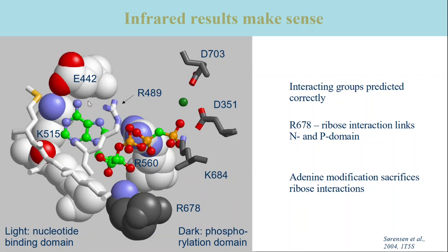The X-ray structure confirms the interactions found by infrared spectroscopy and explains why the modified groups are important. Most interactions with the nucleotide are with residues in the nucleotide binding domain. However, the ribose oxygens and the gamma phosphate interact with the phosphorylation domain. They are therefore important to link the phosphorylation and nucleotide binding domain and to stabilize the closed conformation.